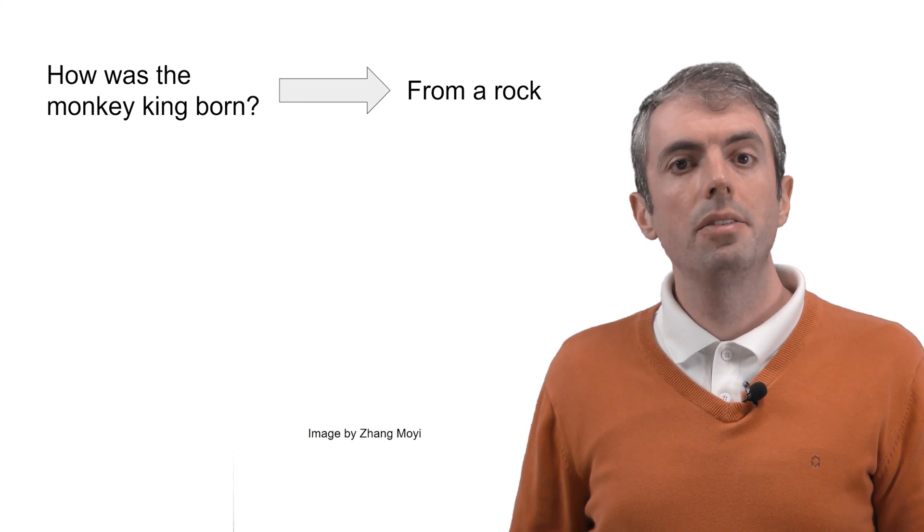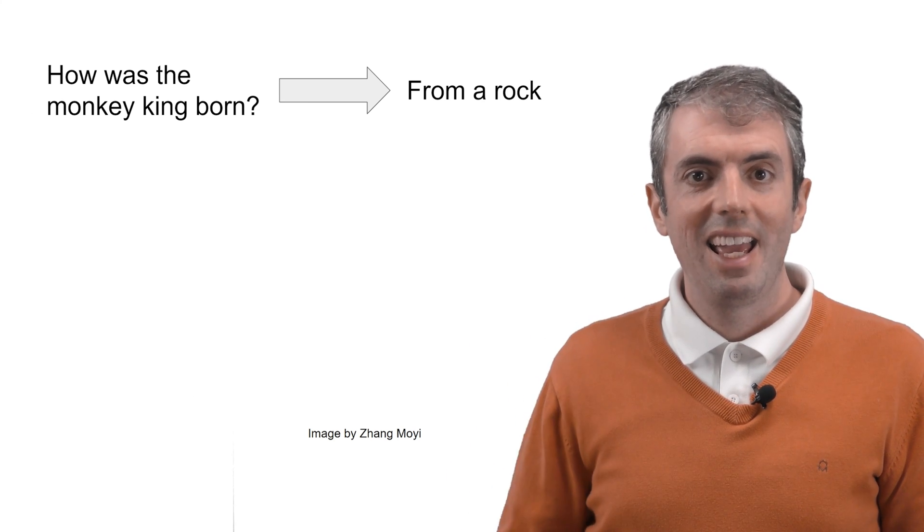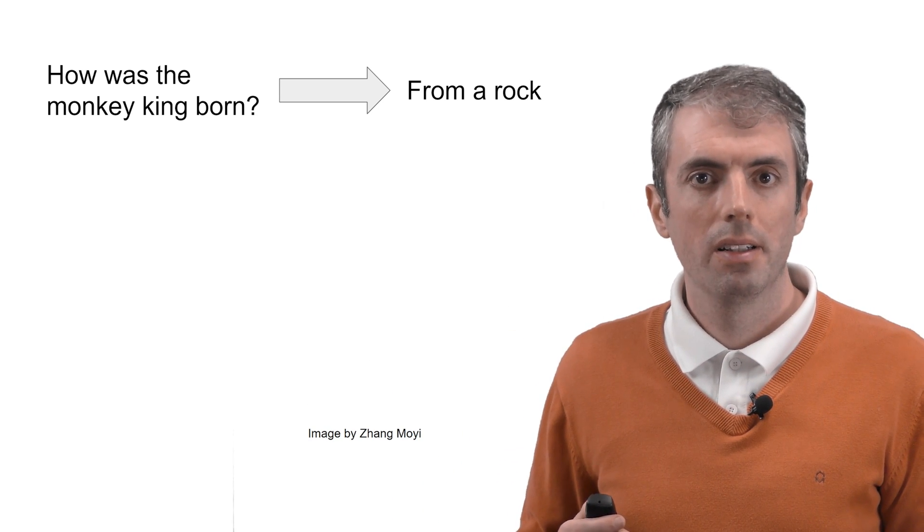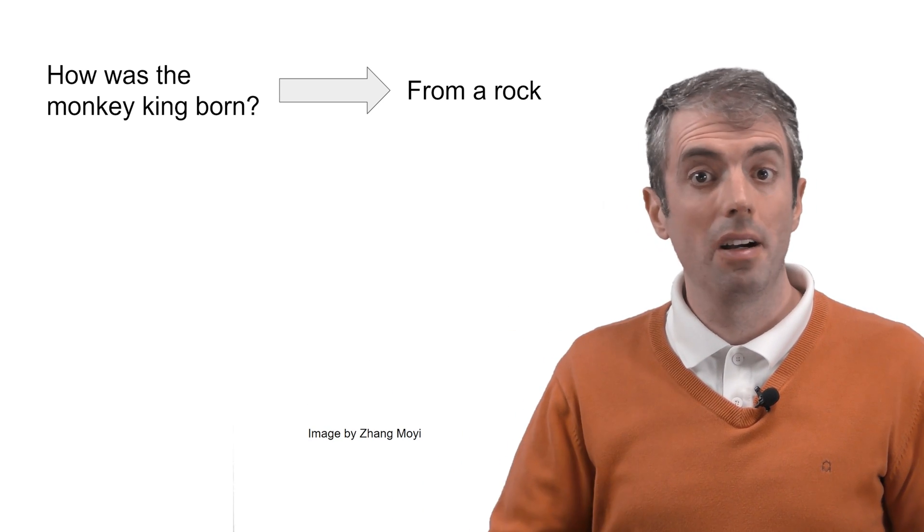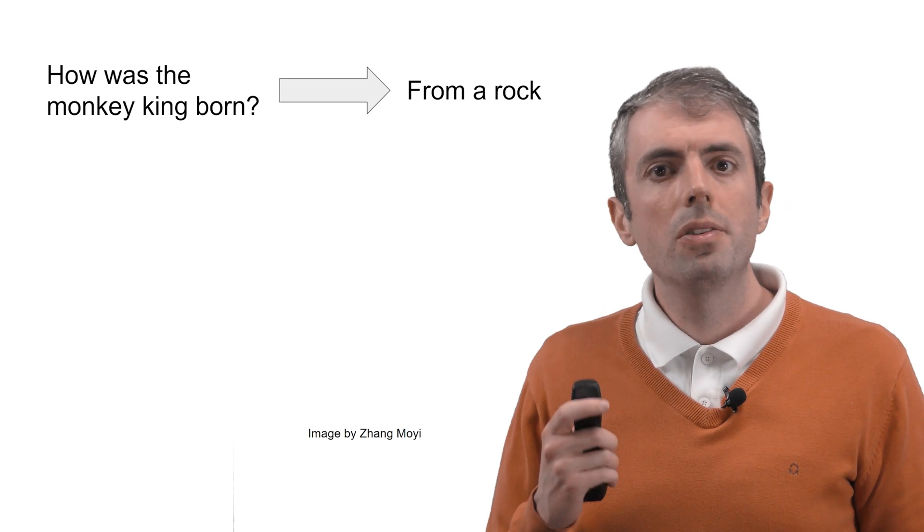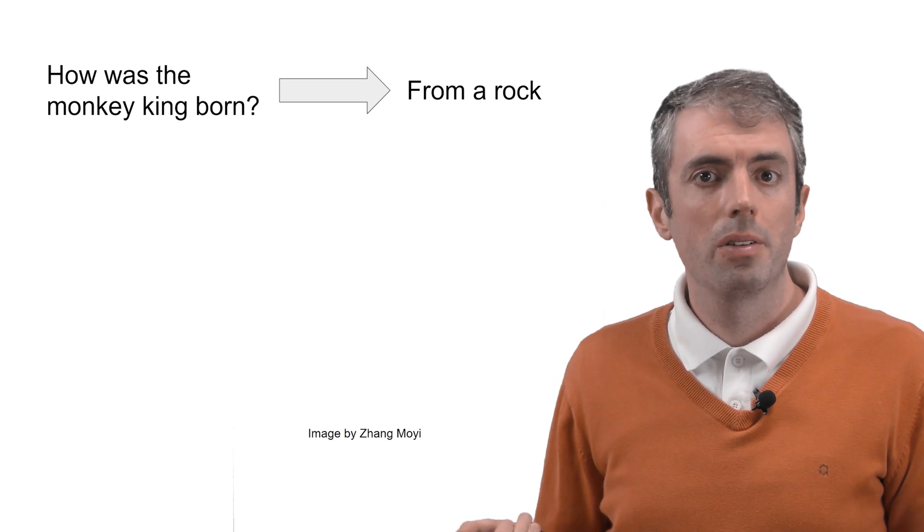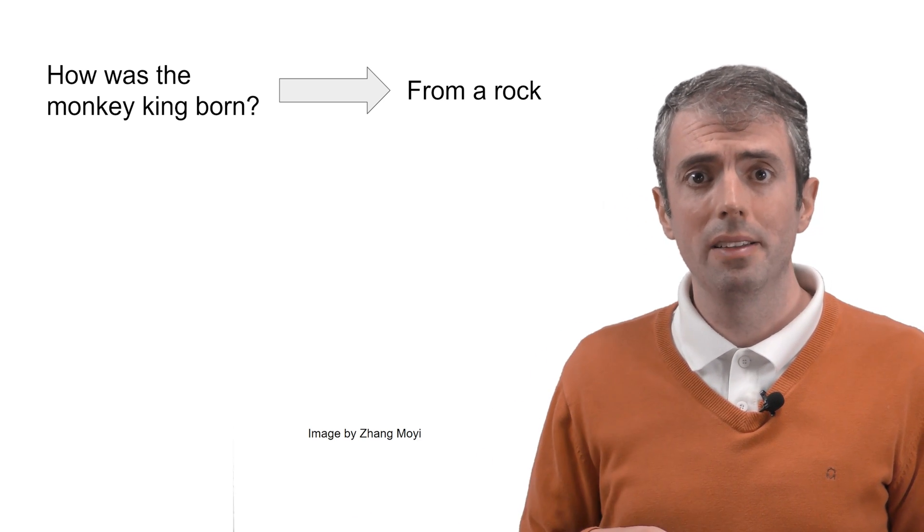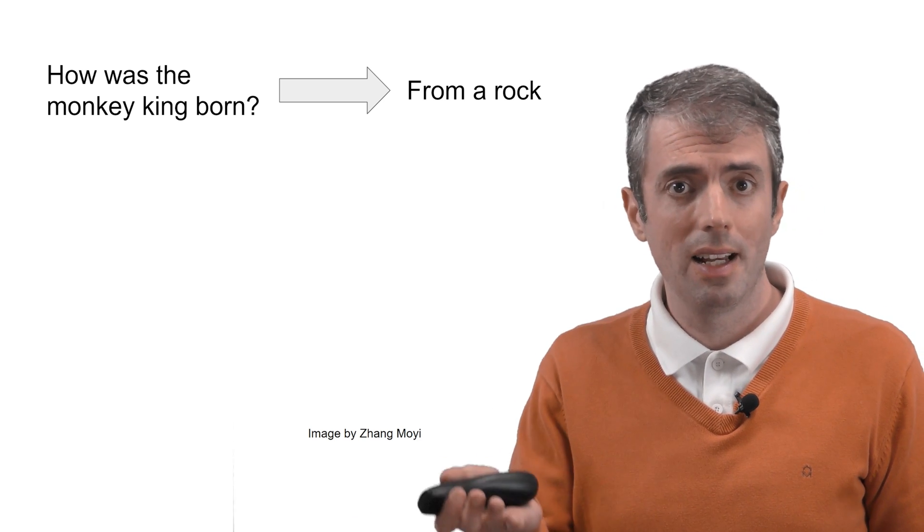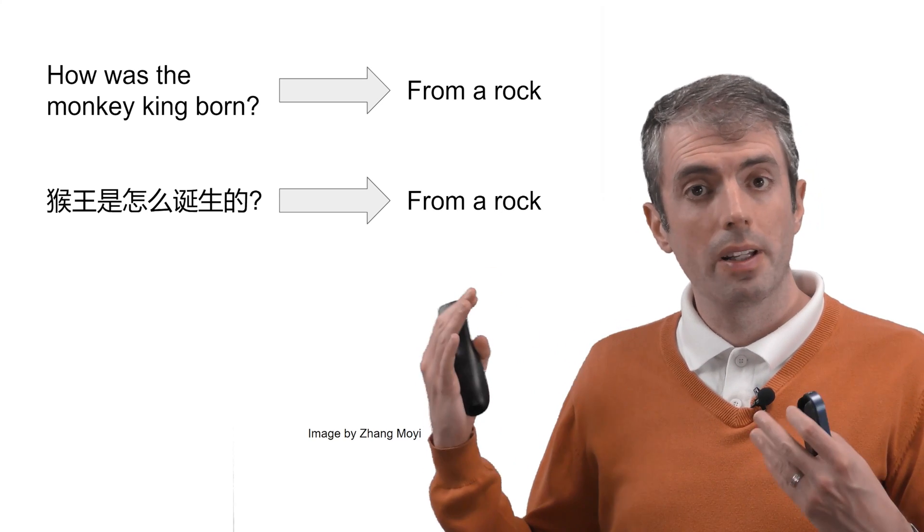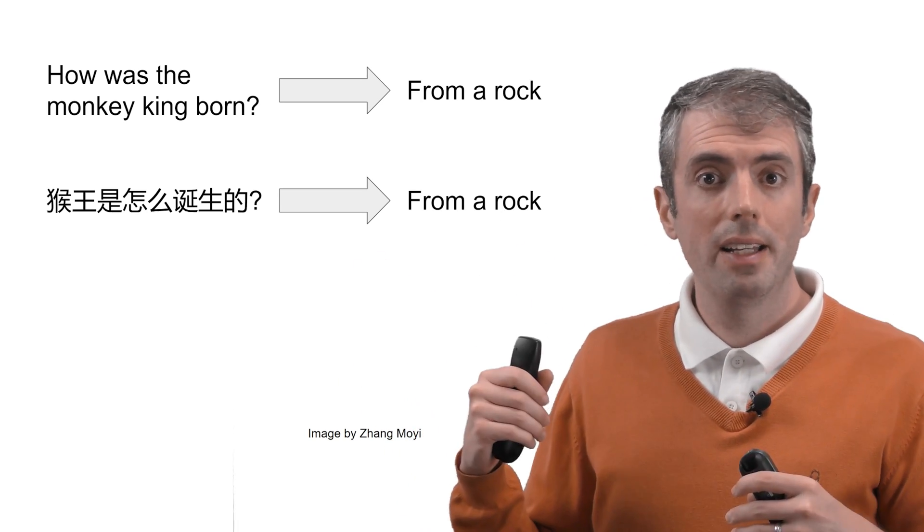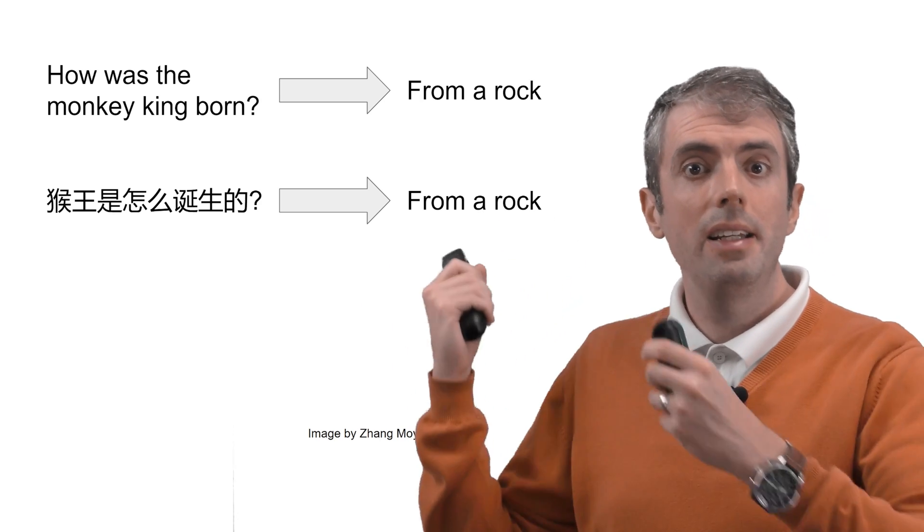Dense passage retrieval lets you find answers to questions like how was the monkey king born? But since we're doing the lookup in an arbitrary vector space, we could train our question encoder to take input in any language. All that matters is the resulting vector space. And does it line up or not? If the encoder can handle, say, Chinese input, and we have the appropriate training data, we can find answers in any language.